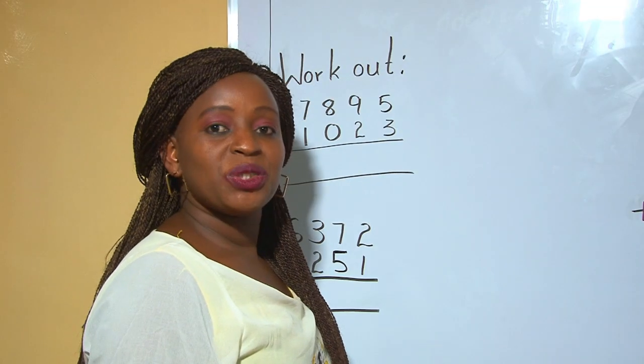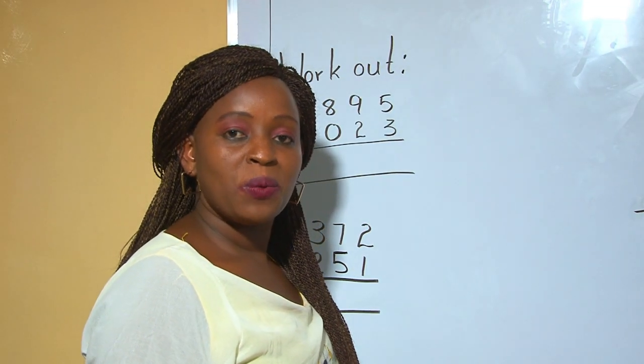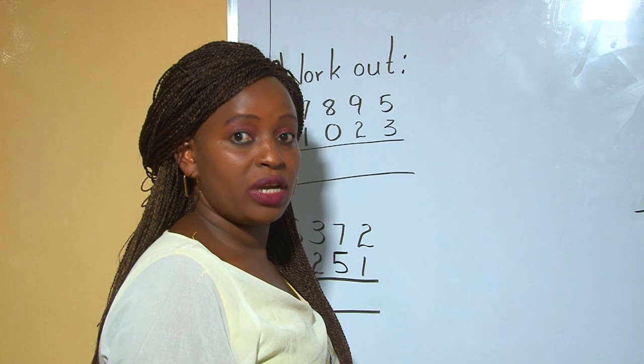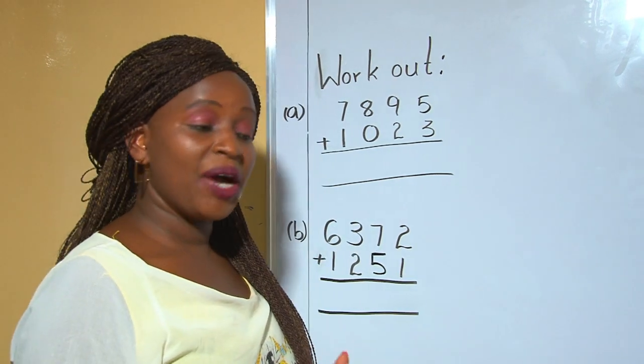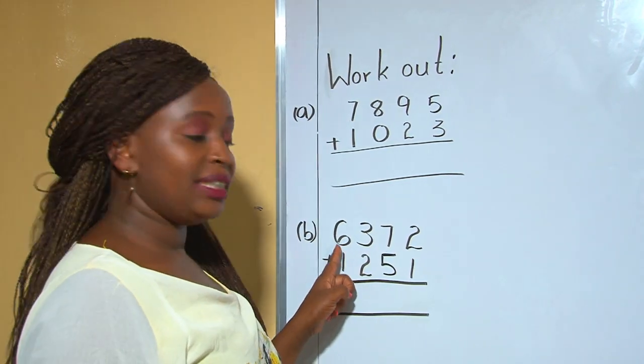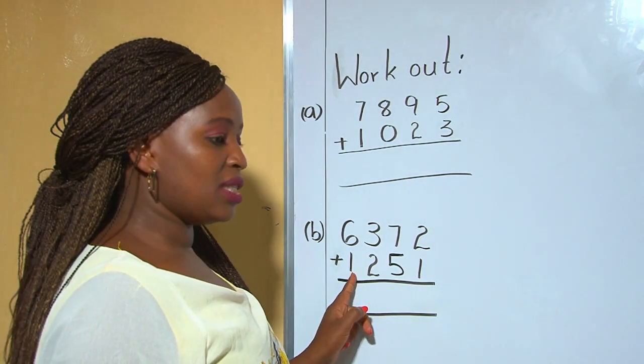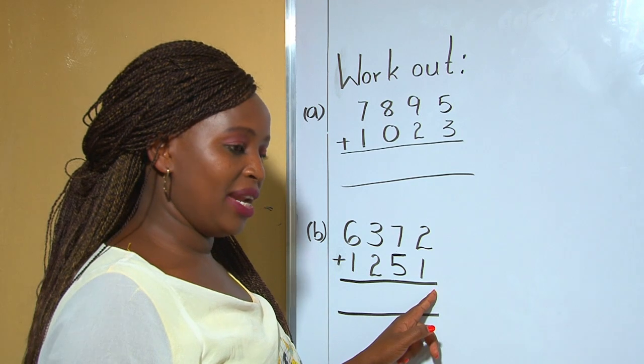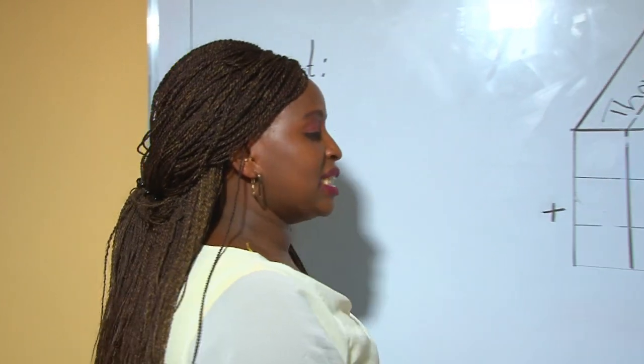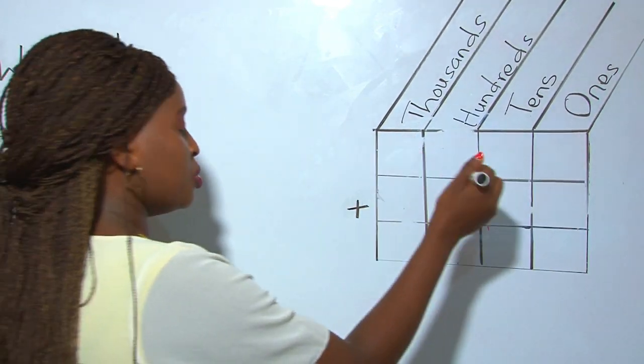Now let's do our second example with single regrouping. If you are given a question like 6,372 plus 1,251, we list down our digits according to the place value.